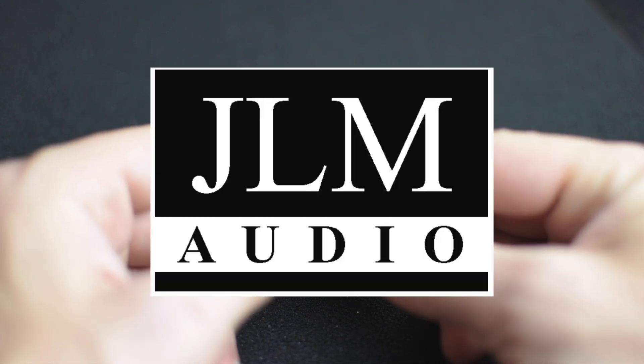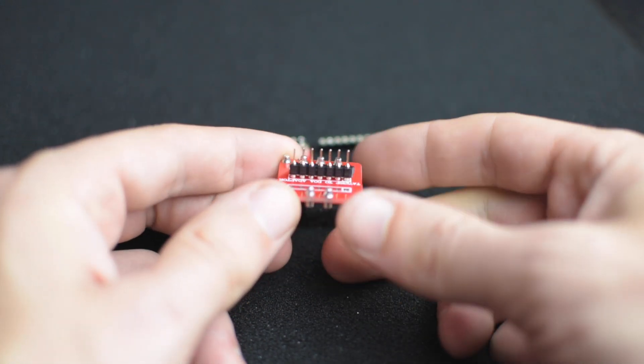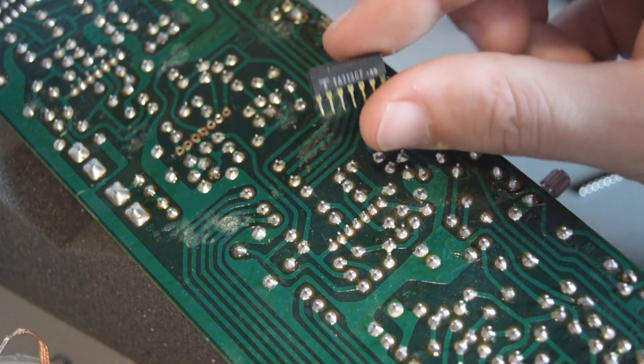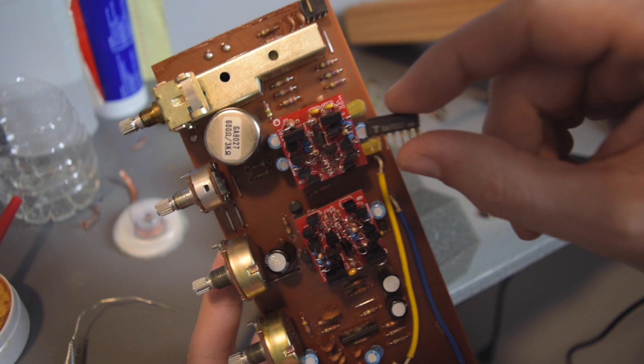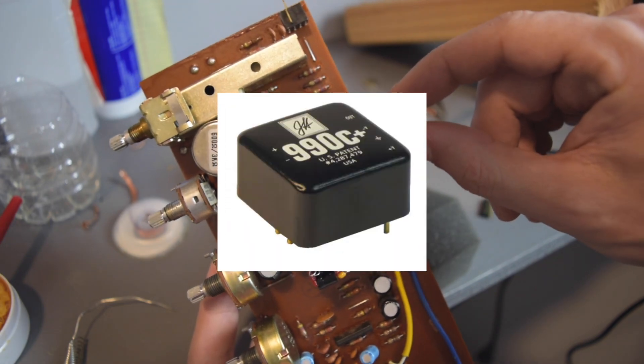This discrete op-amp adapter from JLM Audio is changing the game. It allows you to take an IC chip, specifically a TA7136, and convert it to a 990 or an API 2520 style op-amp.